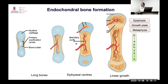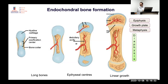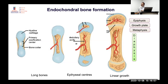Long bone epiphyseal centers mark the end of linear growth. Primary ossification centers come before birth. The first secondary ossification centers — lower femur and upper tibia epiphyses — should appear at birth. In congenital hypothyroidism, these epiphyses will not have appeared on time, which is an important clinical point.